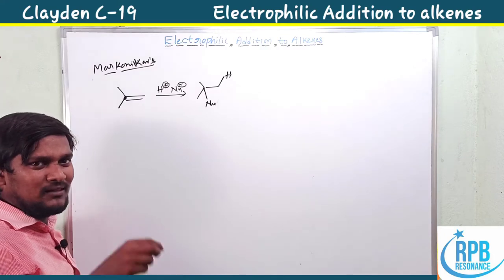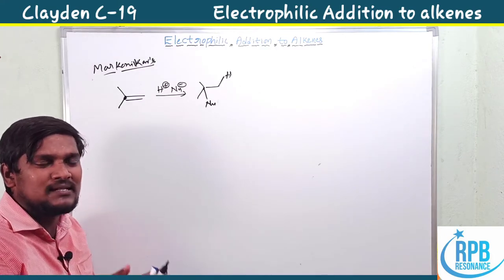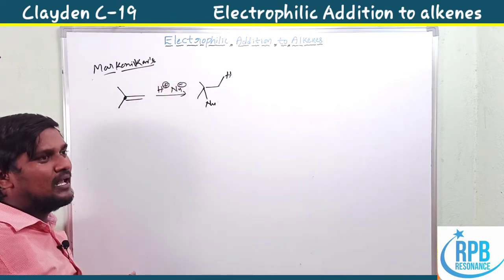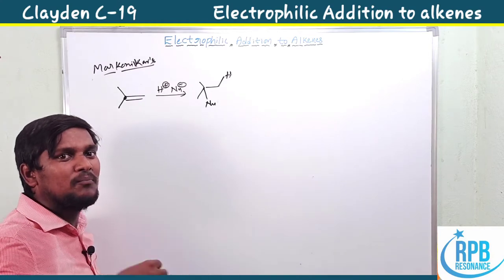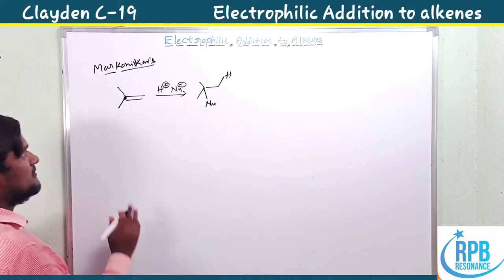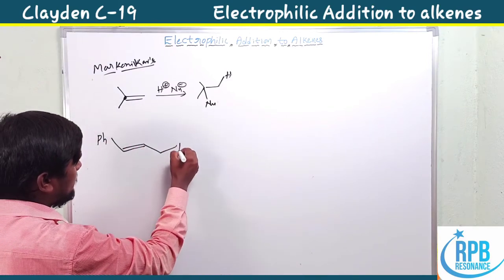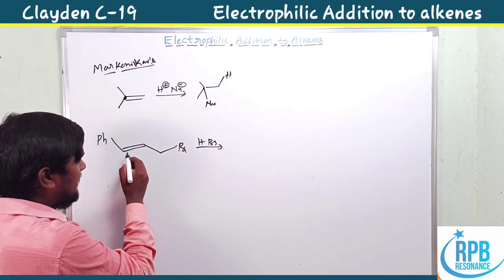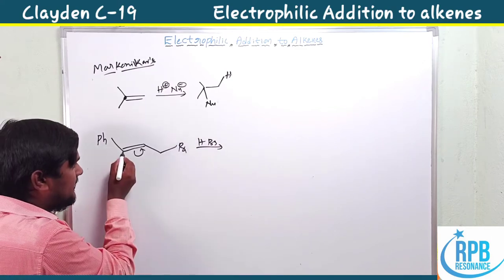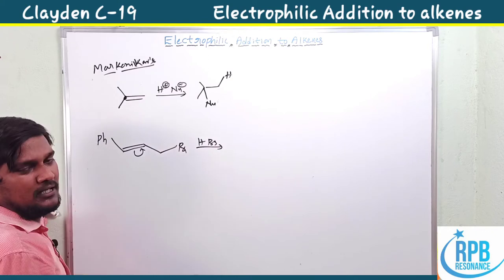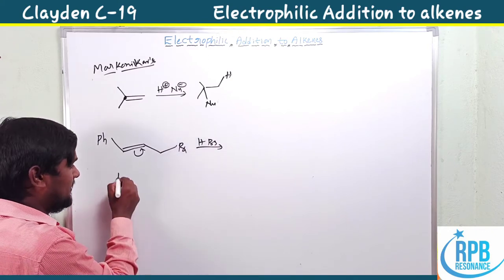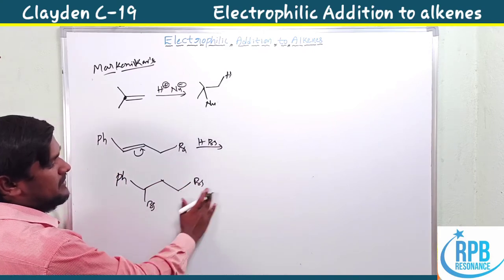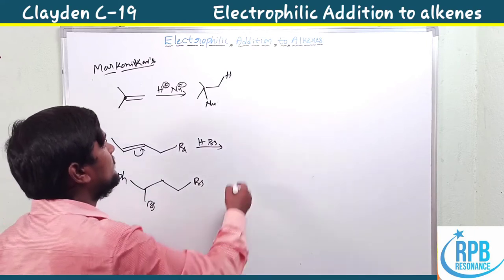According to Markovnikov's rule, the negative part attacks the alkene carbon with fewer hydrogens, or equivalently, H⁺ attacks the alkene carbon with more hydrogens. As a best example: for styrene with HBr, electrons shift to create a positive charge stabilized by the phenyl group — a benzylic carbocation — so bromination takes place at that carbon, giving the Markovnikov product.